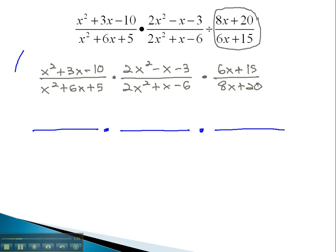In the first numerator, using the ac method, we need to multiply to negative 10 and add to 3. This is done with 5 and 2, if the 2 is negative. Because of the 1 in front of x squared, we know our factors must be x plus 5 and x minus 2.